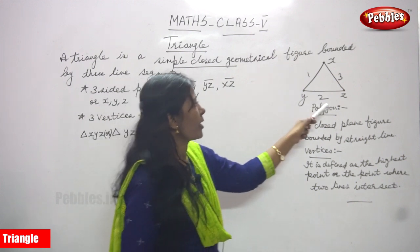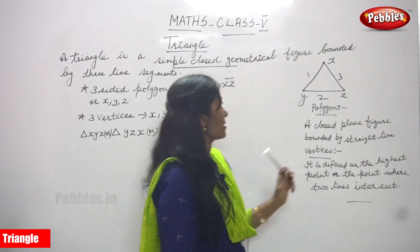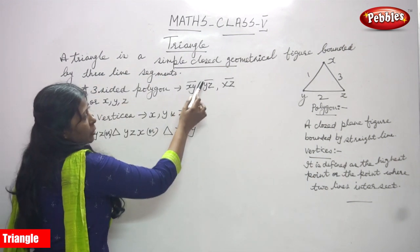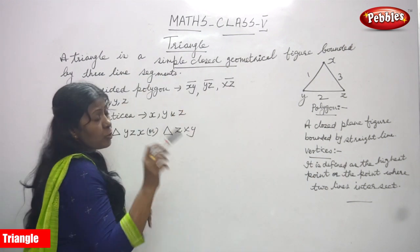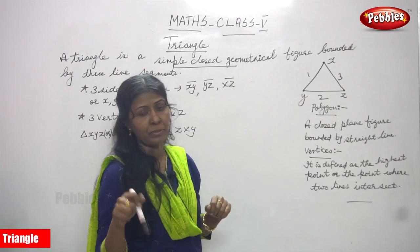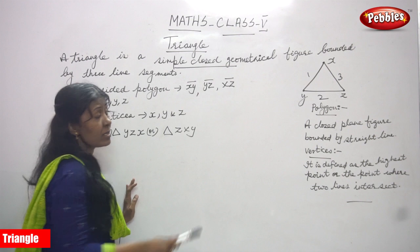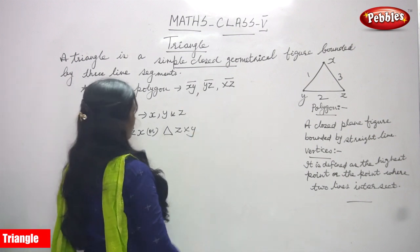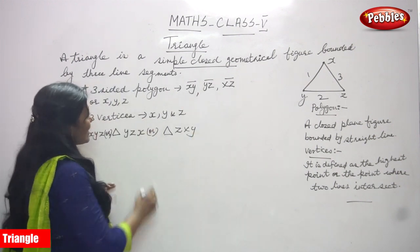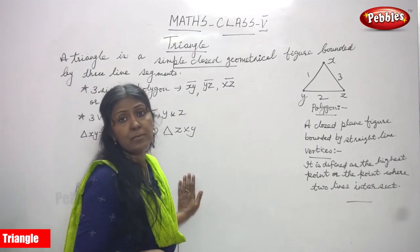So XY, YZ, and XZ — or ZX, whichever you say — these are called line segments. XY is a line segment, YZ is a line segment, and XZ is also a line segment. It is a three-sided polygon.